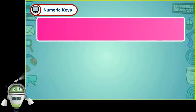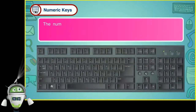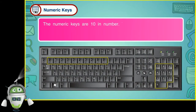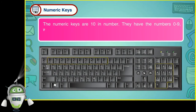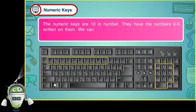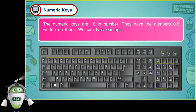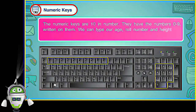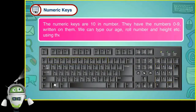Numeric keys: The numeric keys are 10 in number. They have the numbers 0 to 9 written on them. We can type our age, roll number and height, etc. using these keys.